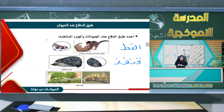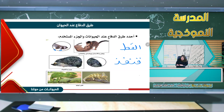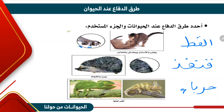وهذا الحيوان يسمى الحرباء. الحرباء كما ترون لونها يشبه لون غصن الشجرة. هي تقوم بتغيير لونها حتى لا تستطيع الحيوانات المفترسة افتراسها، فتظنها بقية من الخشب أو غصن الشجر.